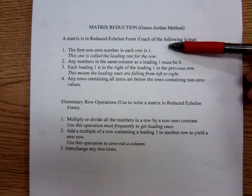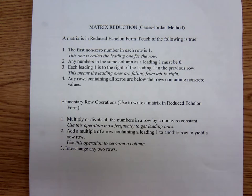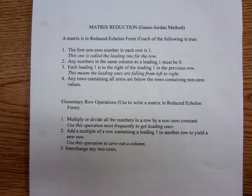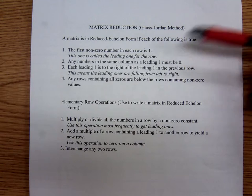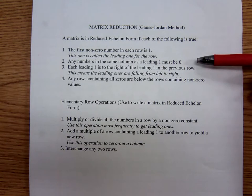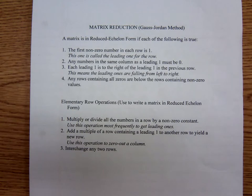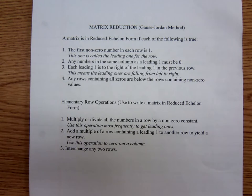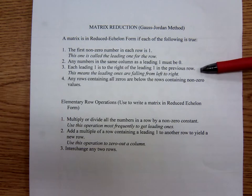The first non-zero number in each row has to be a one. That's not saying the first number in each row is a one, but the first number that's not a zero has to be a one, and that one is called the leading one. The second condition: any number in the same column as a leading one has to be a zero. So if you have a leading one in a column, then above and below it, all those numbers have to be zero.